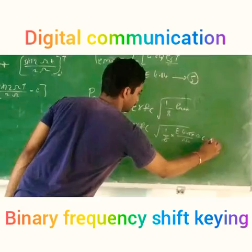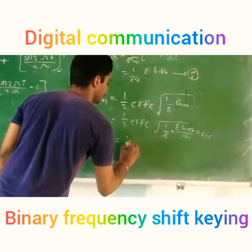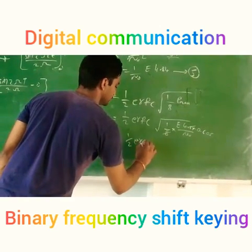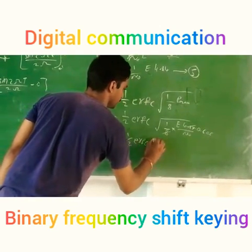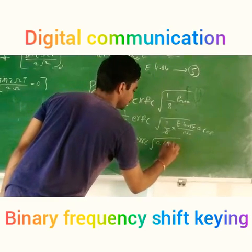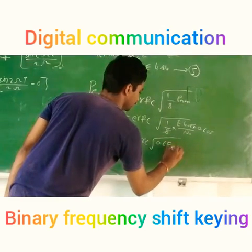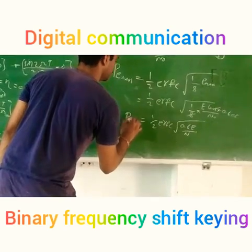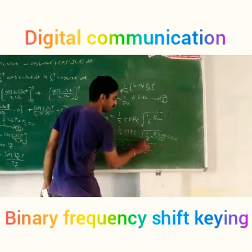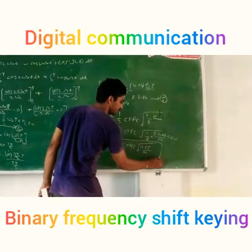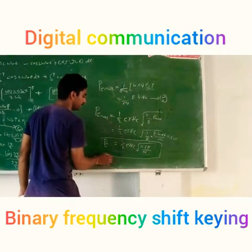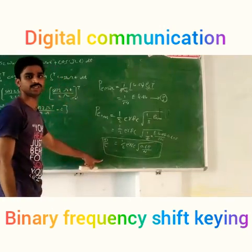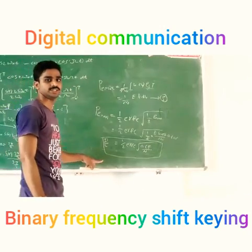So approximately we get 0.6 e by N_0. This is the final result for the probability of error of binary frequency shift keying.